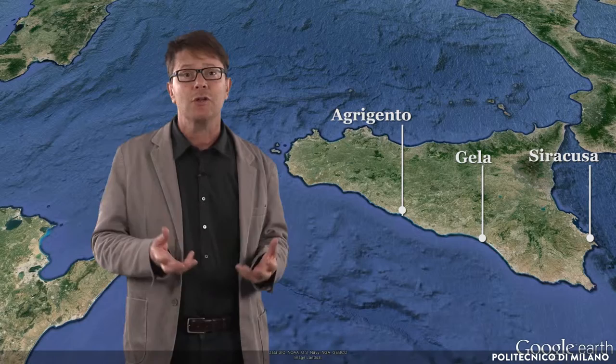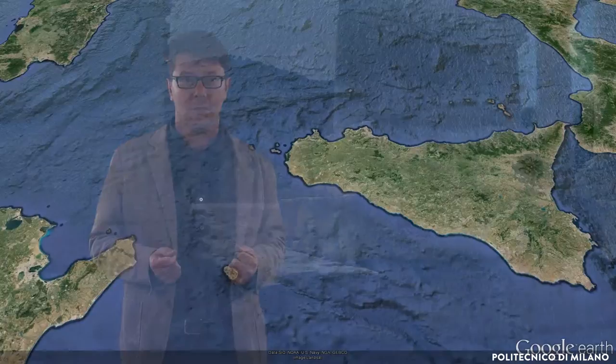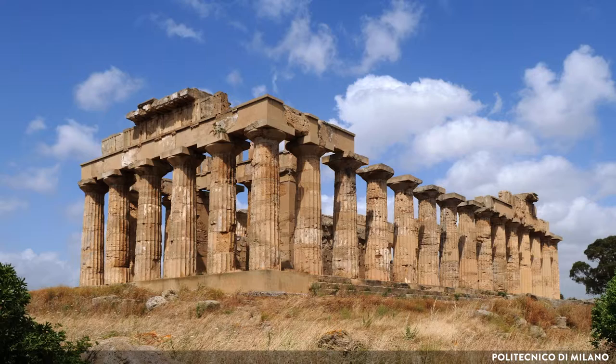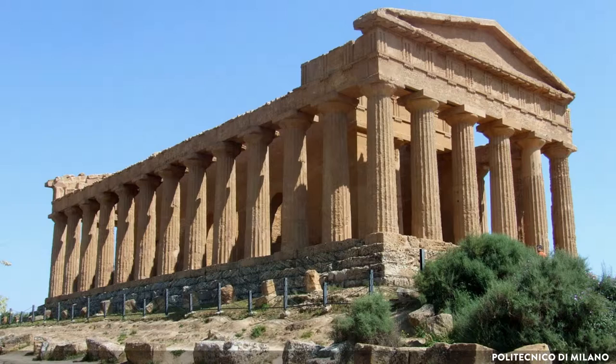Along with culture, the Greeks exported religion, and consequently several magnificent temples were constructed. Even today, many Greek temples of Sicily stand as unequalled masterpieces, among them Segesta, the Selinunte temples, and the Valley of the Temples at Agrigento.